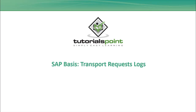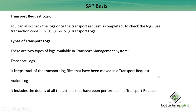Welcome to Rollspoint. In this tutorial we will talk about Transport Request log files, the different return codes, and the different types of logs available in your Transport Management System. You can check the logs for your transport request using the transaction code SE01, once the transport request is completed, to verify whether the transport was successfully completed or there are some errors.